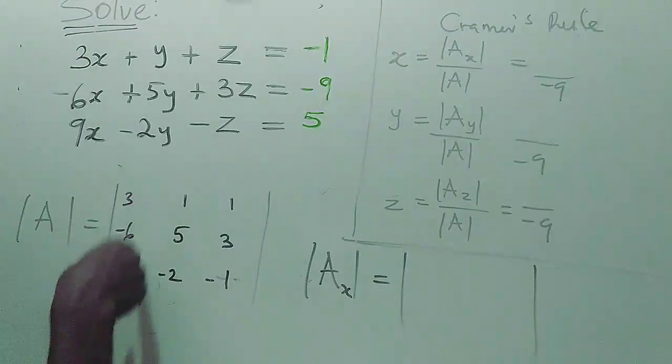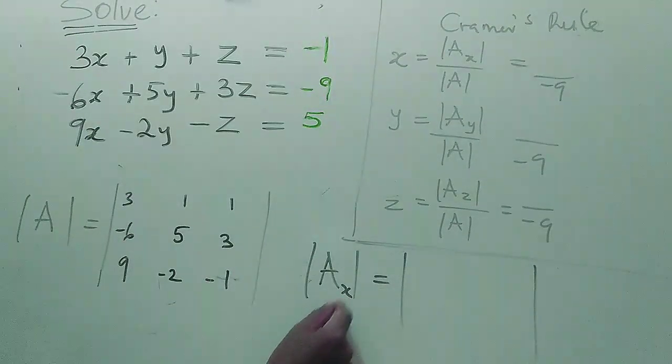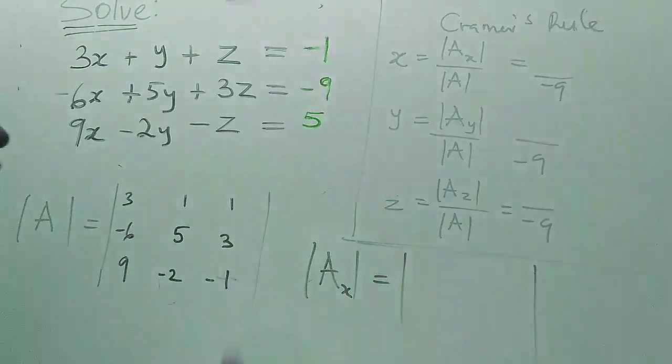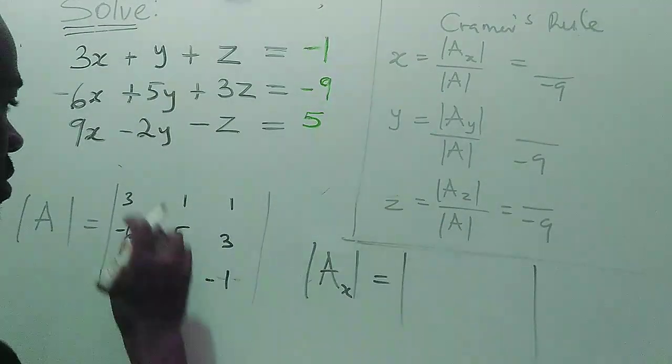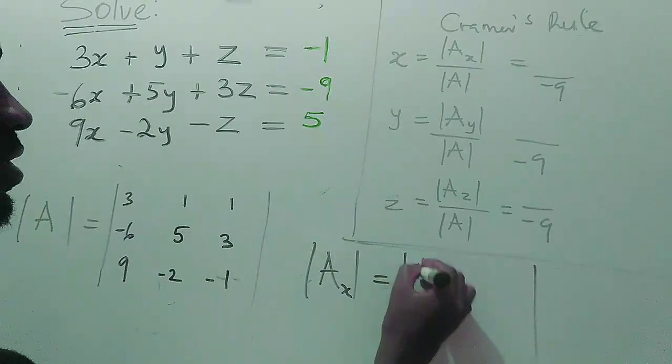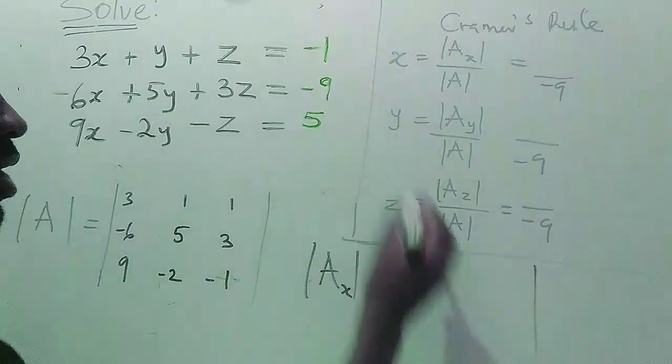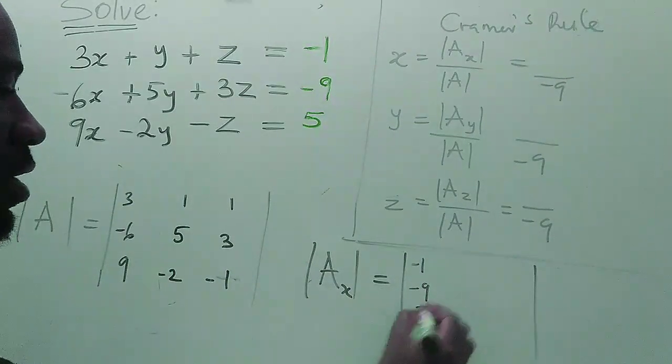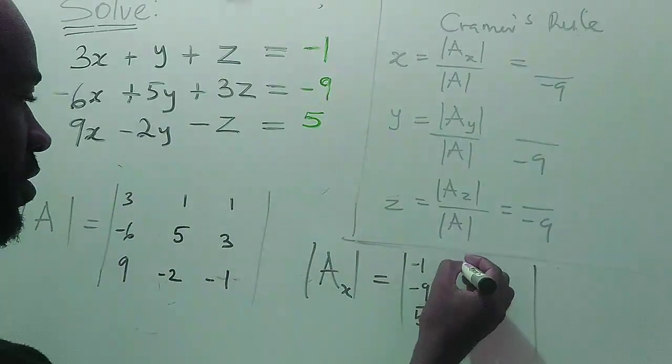So I'm going to this first column, I'm going to replace it with the constant on this right hand side minus one, this one I wrote with a green marker. Then I'm going to put back all this.